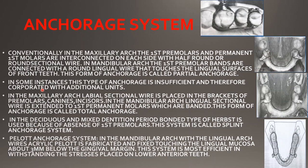This type of anchorage is known as partial anchorage. In some instances, this anchorage is insufficient — it can lead to slippage or breakage — so additional units are incorporated. In the maxillary arch, a labial sectional wire is placed in the brackets of the premolar, canine, and incisors. In the mandibular arch, the lingual sectional wire is extended to the permanent first molar.